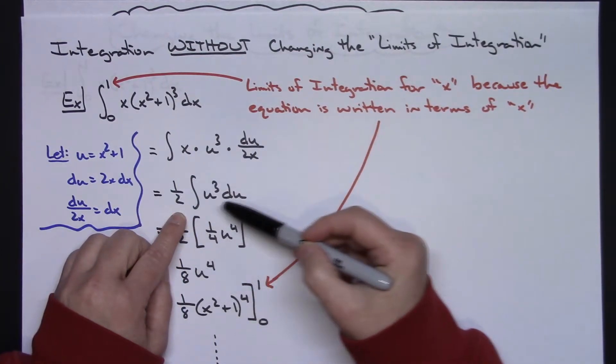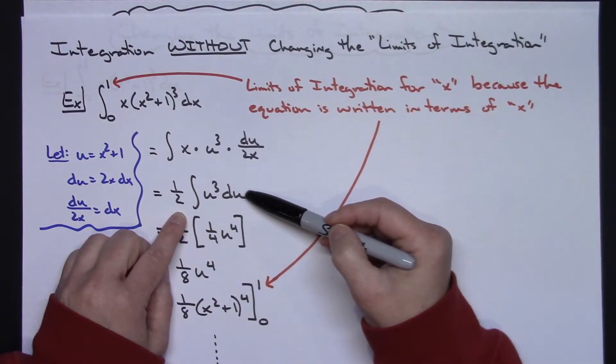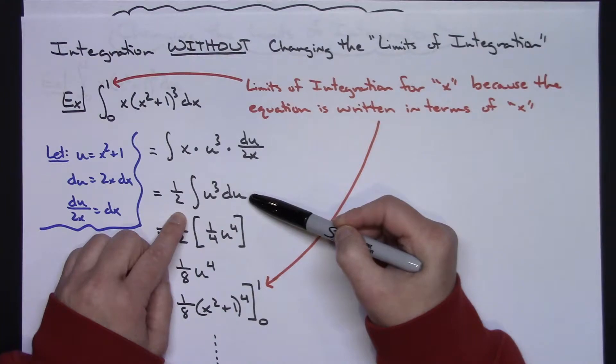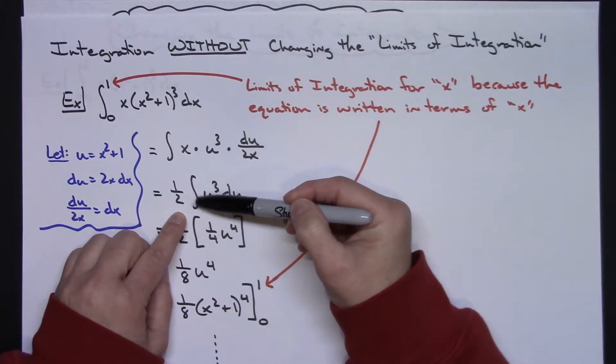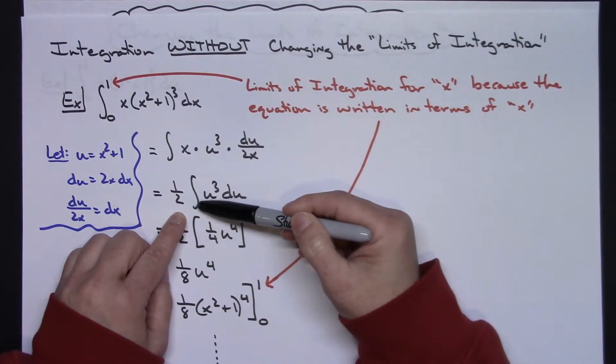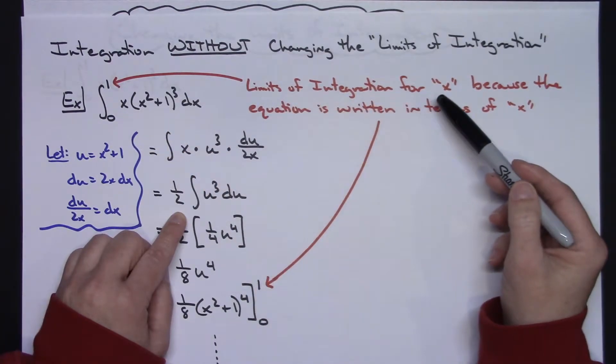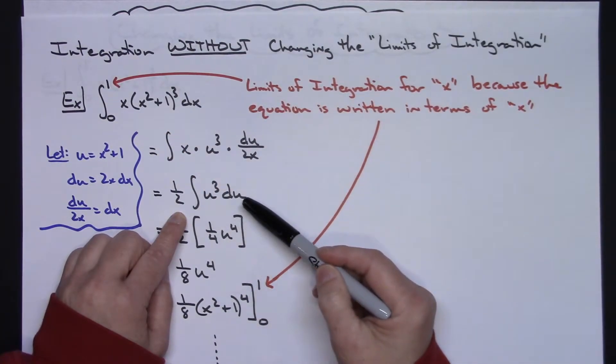Showing the steps, pulling out the one half, crossing out those x's and getting down to here now, I have an equation in terms of u. So again, I will not let my students write a 0 and a 1 right there, because a 0 and 1, those are limits of integration for x. But now my equation is in terms of u.